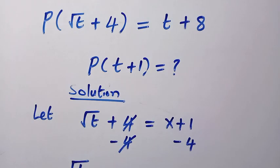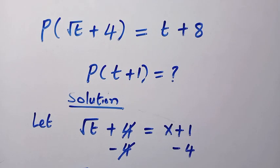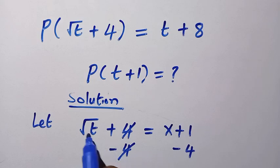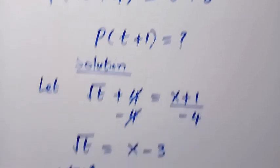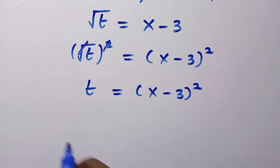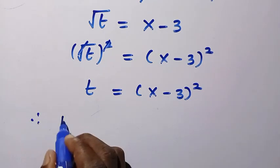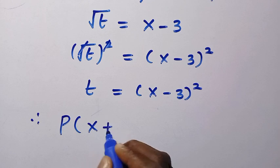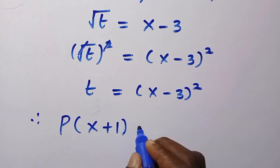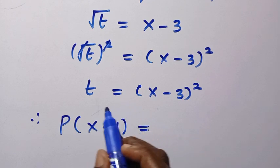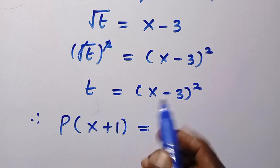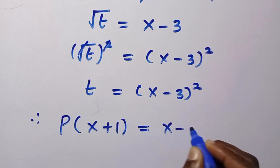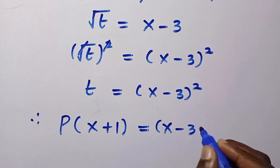Let's come back to the given function. We have P(√t + 4), and we let that √t + 4 be x + 1. By changing it, we have P(x + 1) equals t + 8, and that t is (x - 3)², so P(x + 1) = (x - 3)² + 8.